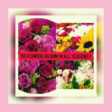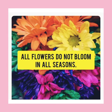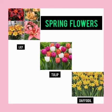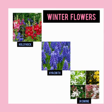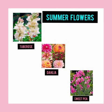Do flowers bloom in all seasons? All flowers do not bloom in all seasons — they have specific blooming seasons, though flowers are seen throughout the year. Spring flowers include tulip, lily, and daffodil. Autumn flowers include rose, chrysanthemum, and zinnia. Winter flowers include hollyhock, hyacinth, jasmine, tuberose, dahlia, and sweet pea.